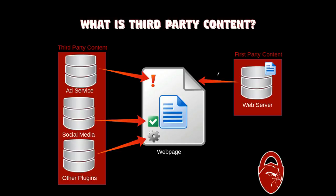What is third-party content? Basically, a website consists of several elements, and they're not always from the same place. The first-party content would be the information from the website itself — that can be anything, like the contents of a blog, a news article, or something similar. That's what comes from the web server, and that's what we consider first-party content.